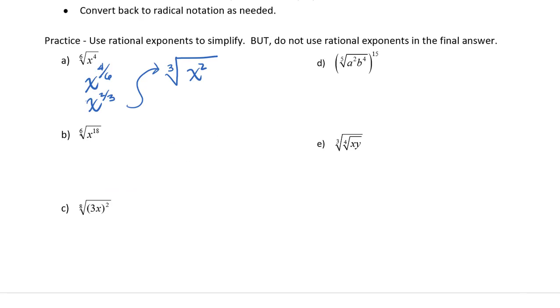Now let's look at b. This is the sixth root of x to the eighteenth. We can rewrite this as x to the eighteen over six. This reduces to x to the third.